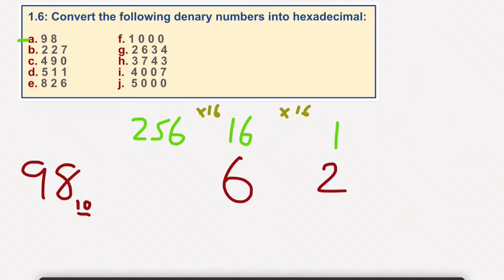So 98 would equal, in hexadecimal, 62. 6 times 16 equals 96, plus 2 times 1, equaling 2. So that would equal 98. Nice and simple.